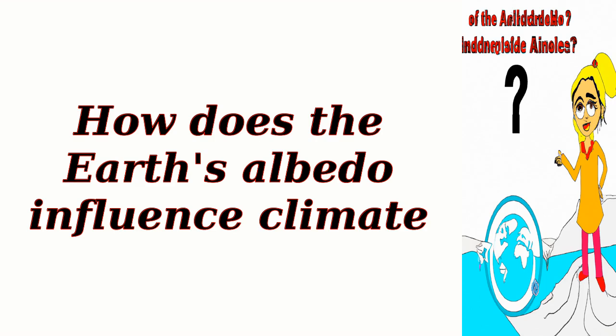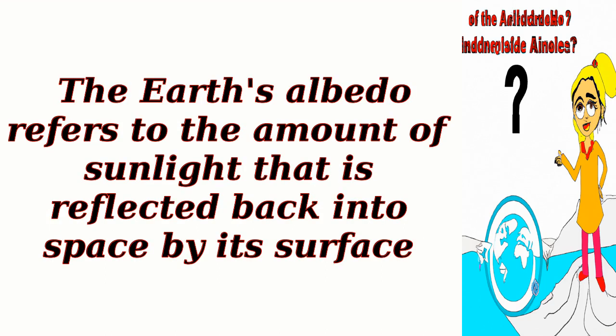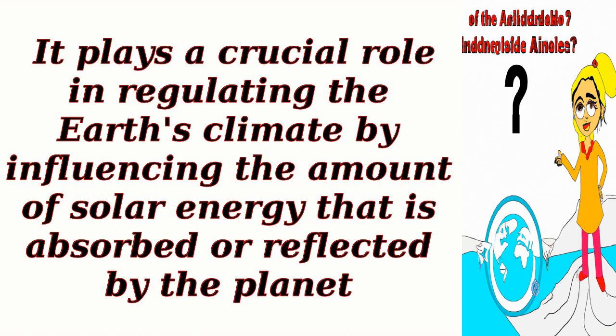How does the Earth's albedo influence climate? The Earth's albedo refers to the amount of sunlight that is reflected back into space by its surface. It plays a crucial role in regulating the Earth's climate by influencing the amount of solar energy that is absorbed or reflected by the planet.